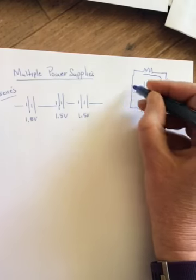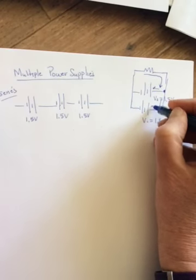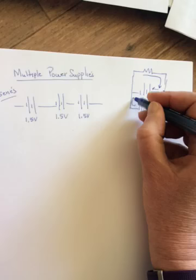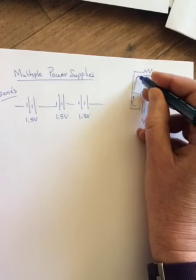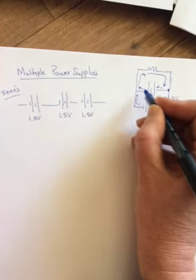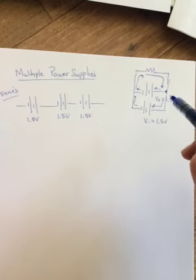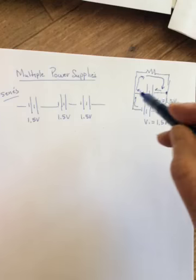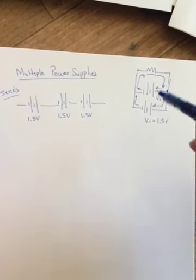They could either go across this way and pick up 1.5 volts, or they could go down and cross this one and pick up 1.5 volts. Either way they get 1.5 volts, there's no way they can get 3. Like they can't go down here and swing around because they'd be going against the battery.